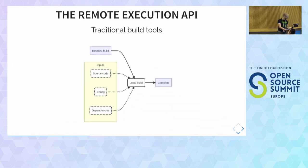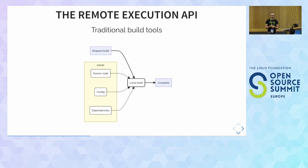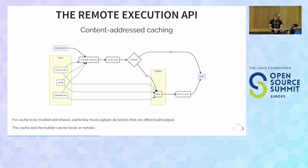To go into a little more detail: a regular build tool like Make looks at your inputs — source code and dependencies — runs the build locally, and you get your binary. If you tell it to build again on a different machine, it builds again. With the Remote Execution API, we first hash all the inputs — source code, dependencies, and build configuration — to produce a cache key. We check the cache: if there's a matching binary, we fetch it. If not, we run a local build, push to the cache, and we're done.